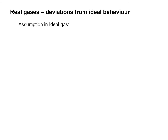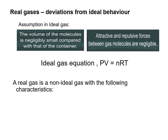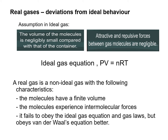On the other hand, real gases deviate from ideal behaviour. If ideal gas has no volume and no intermolecular forces and obeys the ideal gas equation, real gas is non-ideal. So, it would have a finite volume, experience intermolecular forces, and fail to obey the ideal gas equation. Real gas obeys Van der Waals' equation.